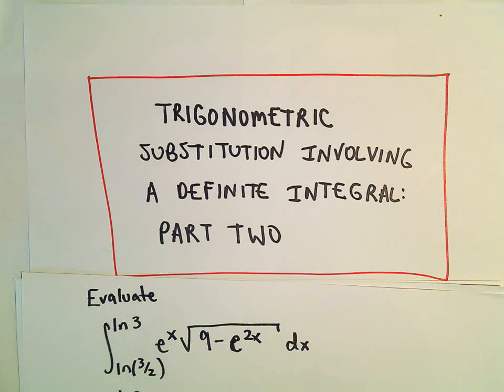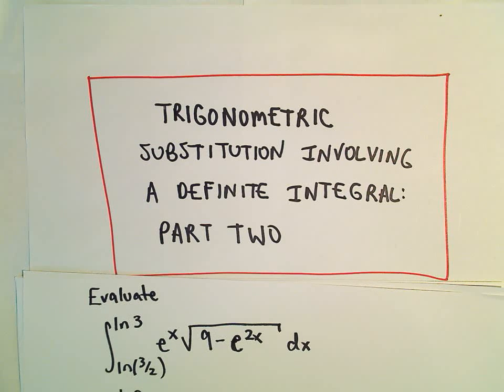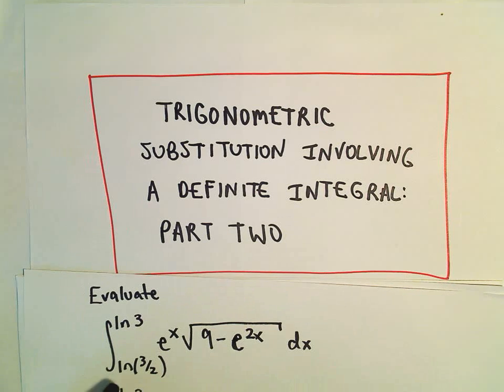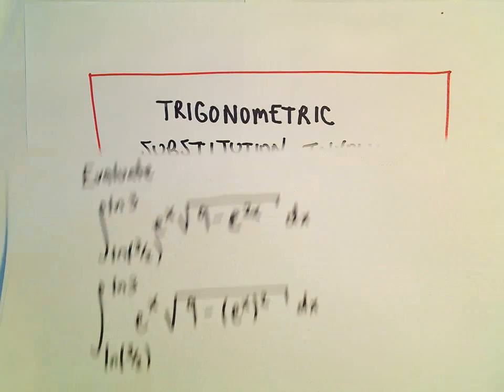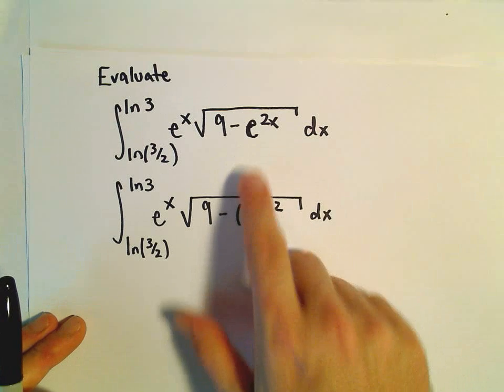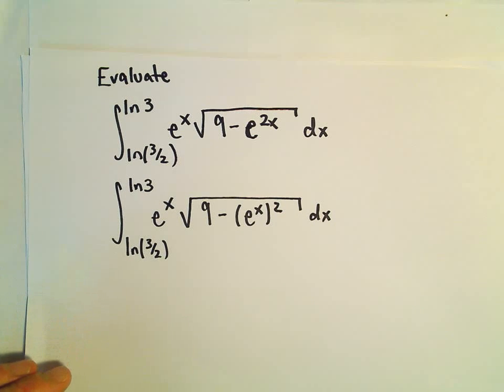Alright, in this video we're going to do another trigonometric substitution involving a definite integral. We've got the integral from ln of 3 halves to ln of 3, e to the x times the square root of 9 minus e to the 2x. The first thing I've done is just rewrite the e to the 2x as e to the x squared.